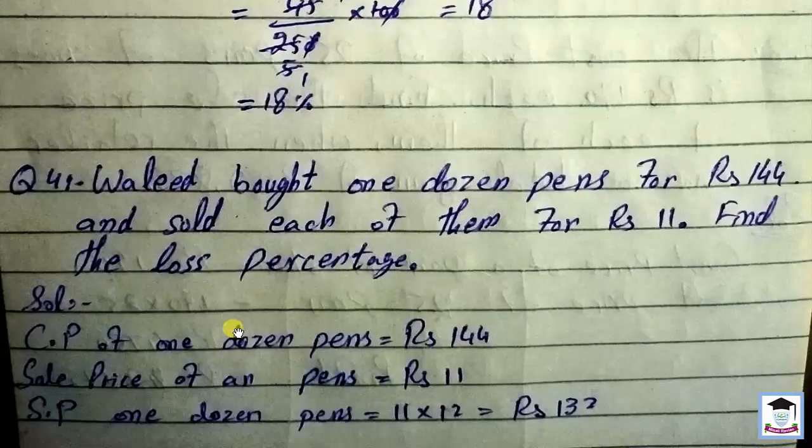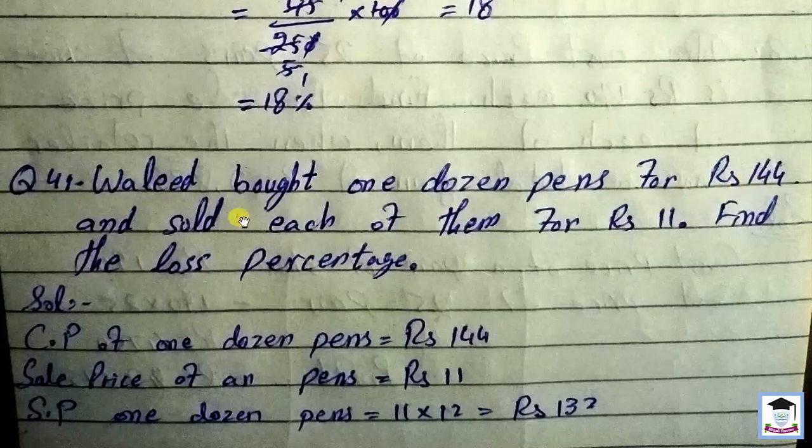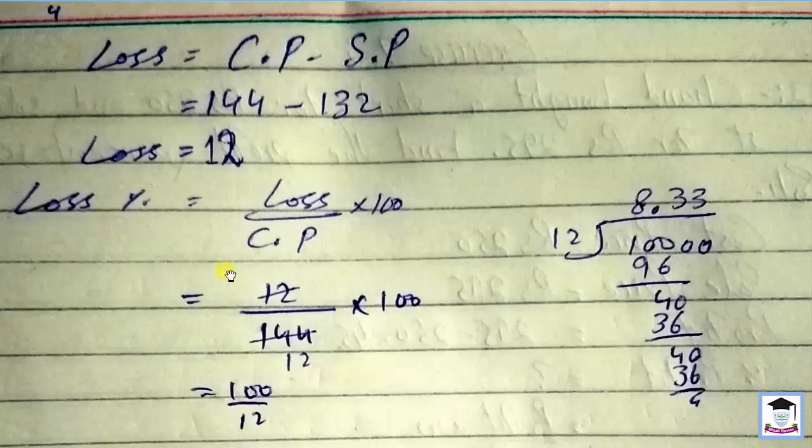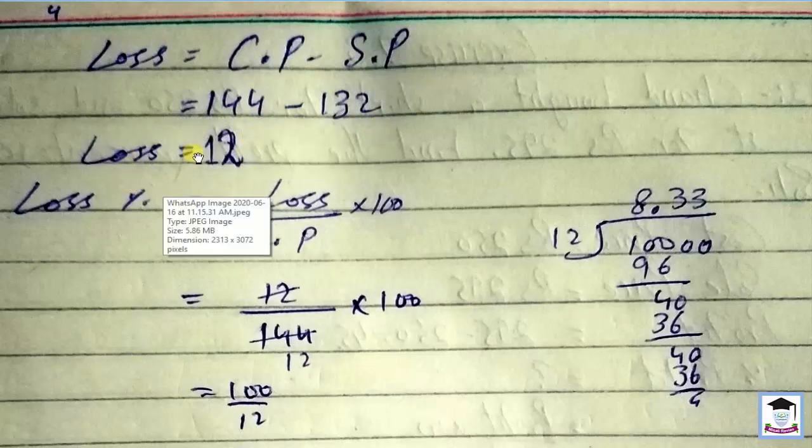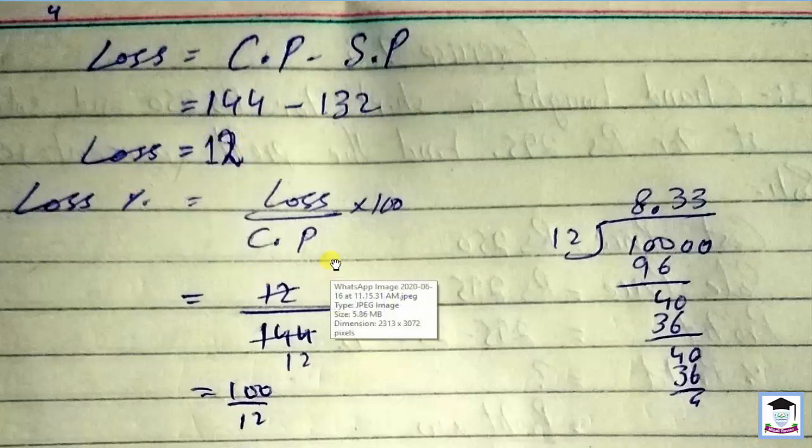Cost price of one pen: 11 rupees. Sale price of one dozen pens: 11 multiply by 12 equals 132. Loss: cost price minus sale price, so 144 minus 132 equals 12 rupees loss.